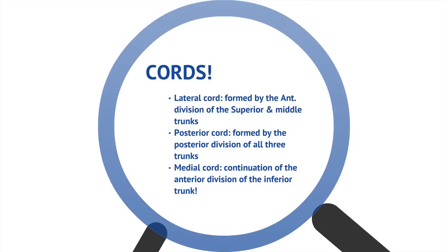Let's look at the cords now. There's the lateral cord, the posterior cord, and the medial cord. The lateral cord is formed by the anterior division of the superior and middle trunks. The posterior cord is formed by the posterior division of all three trunks. And the medial cord is a continuation of the anterior division of the inferior trunk.